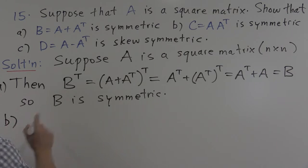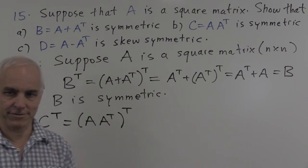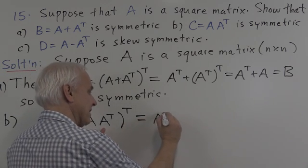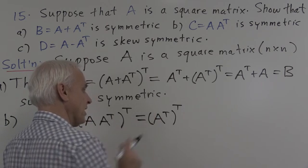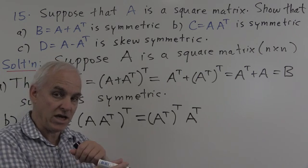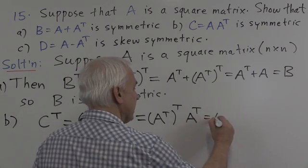Now let's look at C. We compute C transpose. C is A times A transpose, so C transpose equals (A times A transpose) transpose. Taking the transpose of a product reverses the order: it equals (A transpose) transpose times A transpose. Since the transpose of a transpose is the original matrix, this is A times A transpose, which is just C. So C transpose equals C, meaning C is symmetric.